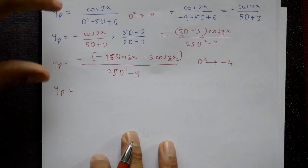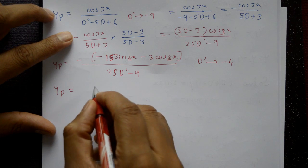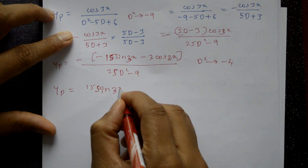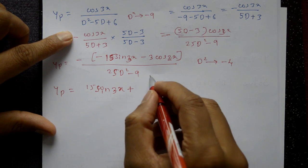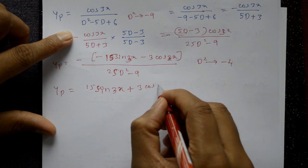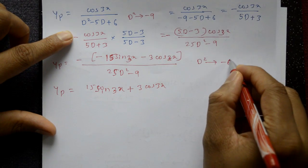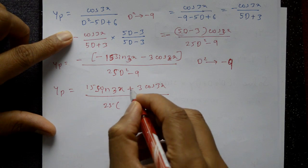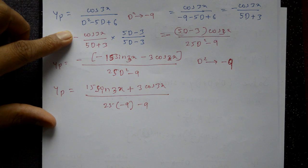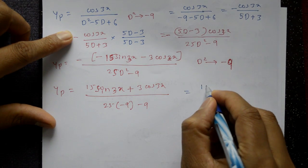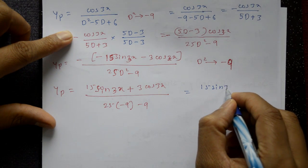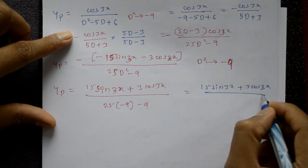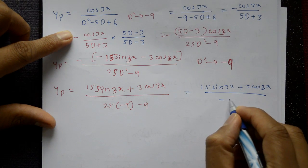With the minus signs: yp = (−)(−15sin3x − 3cos3x) / (25·(−9) − 9) = (15sin3x + 3cos3x) / (−225 − 9) = (15sin3x + 3cos3x) / (−234).